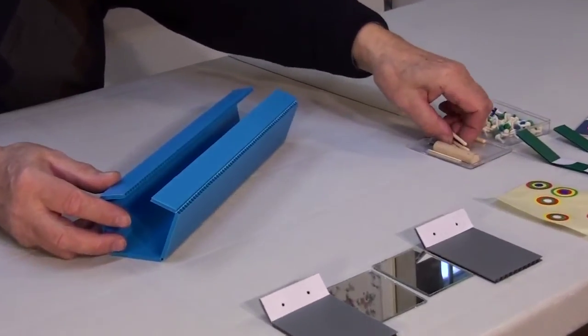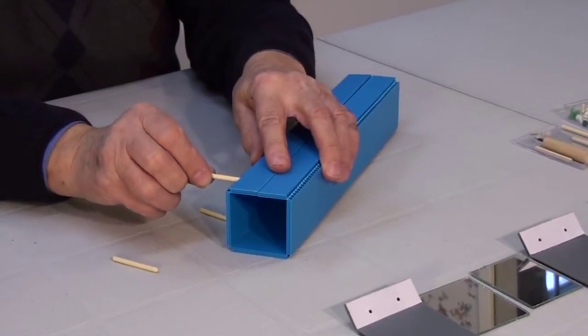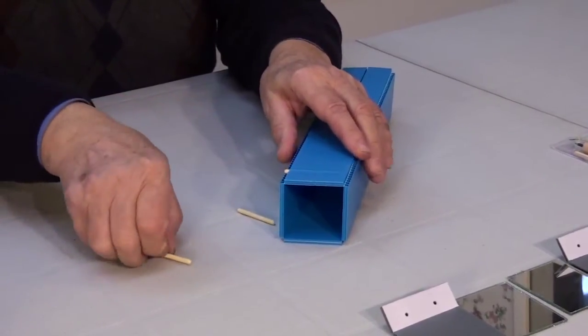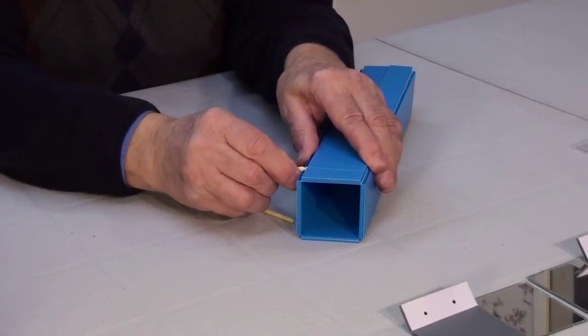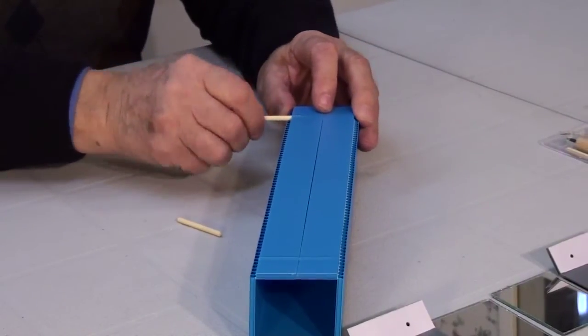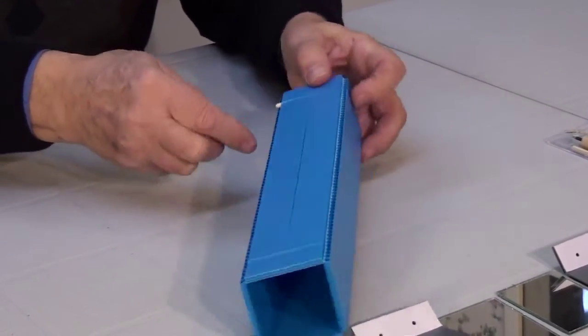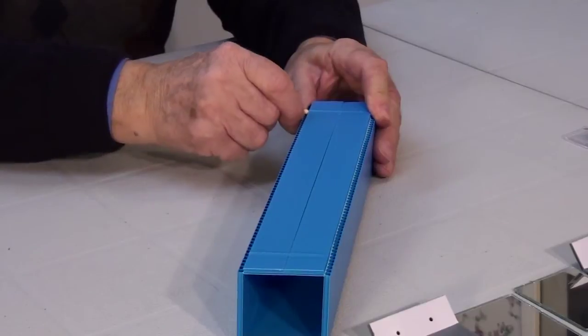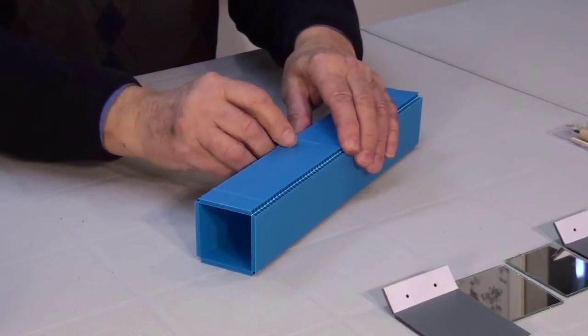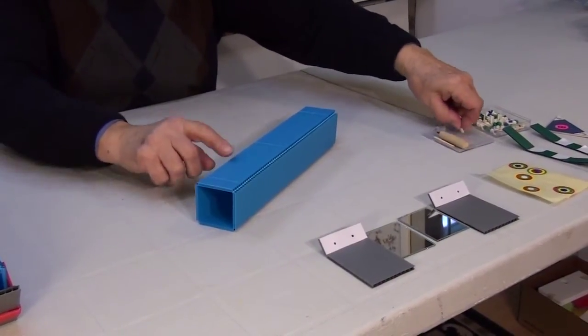In order to connect the edges we will use the five dowels included in the kit. We will insert these dowels into the channels along the tube. First two are inserted approximately one inch or two centimeters from the ends. The third one is inserted in the middle and the last two in between.